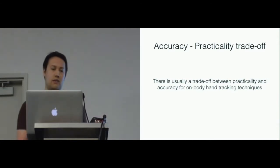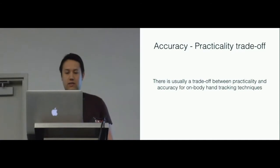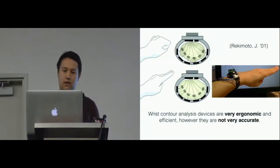There's usually a trade-off between practicality and accuracy for on-body tracking techniques. For example, there are some techniques which look at the change in shape of the wrist. This happens as a result of the tendons and muscle shifting as hand gestures are performed. Whilst they can be quite small and ergonomic, they're usually not the most accurate.